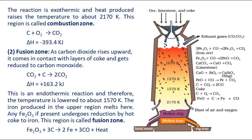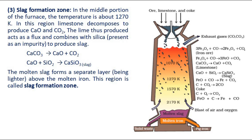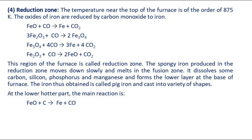This region is called the fusion zone. Slag formation zone: In the middle portion of the furnace, the temperature is about 1270 Kelvin. In this region limestone decomposes to produce lime and carbon dioxide; the lime thus produced acts as a flux and combines with silica, present as an impurity, to produce slag. The molten slag forms a separate layer, being lighter, above the molten iron. This region is called the slag formation zone. Reduction zone: The temperature near the top of the furnace is of the order of 875 Kelvin. The oxides of iron are reduced by carbon monoxide to iron. This region is called the reduction zone.